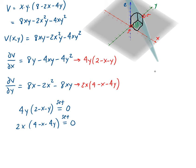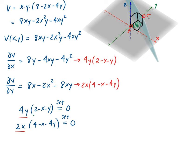If we let x and y both equal zero, that will satisfy these equations, but that is not what we want — x = y = 0 gives the origin. We want the other vertex, the one diagonally across from the origin. So to find that, we need to focus on the other factor from each equation.